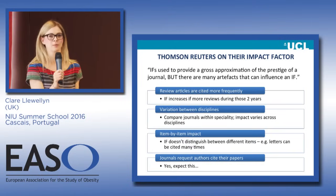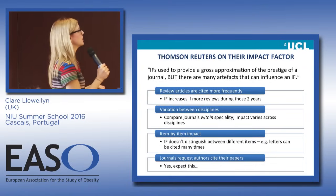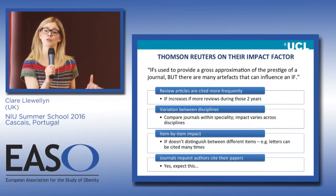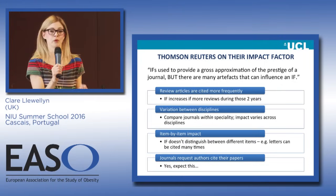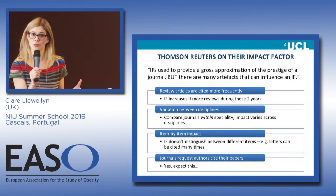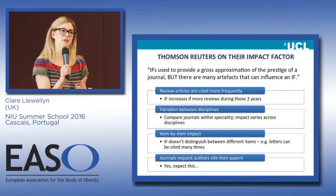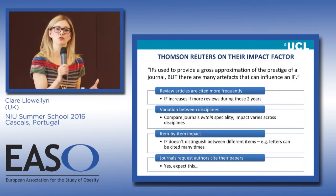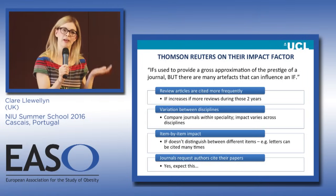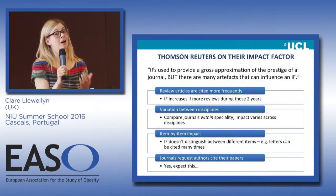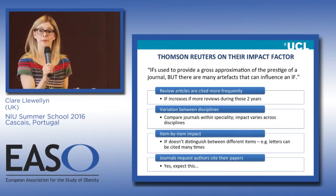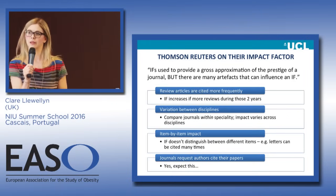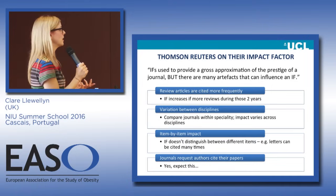Thomson Reuters, who issue the metric, acknowledge that themselves: 'Impact factors are used to provide a gross approximation of the prestige of a journal, but there are many artifacts that can influence an impact factor.' Review articles are cited more frequently than original research articles, so review journals often have very high impact factors. A journal can also artificially inflate its impact factor by publishing an unusually high number of review articles. There is also huge variation between disciplines in the number of citations received.